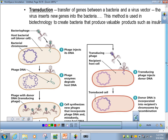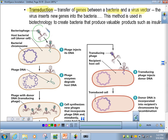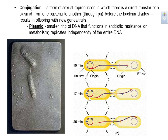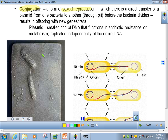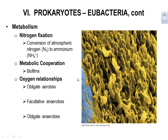In transduction, a bacteriophage lands on the outside of a bacterium, injects its genetic material, which gets incorporated into the bacterium's DNA, so the transduced cell now has a piece of viral genetic material incorporated. In conjugation, there is a direct transfer of a plasmid from one bacterium to another through the pili forming a conjugation tube. A plasmid is a small ring of DNA that normally functions in antibiotic resistance or better metabolism and replicates independently of the main chromosome.